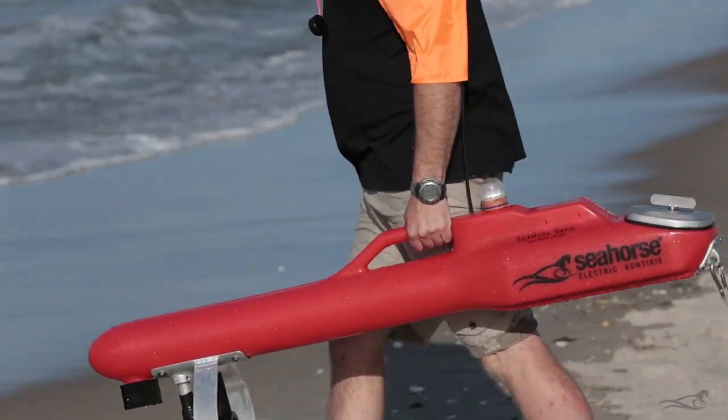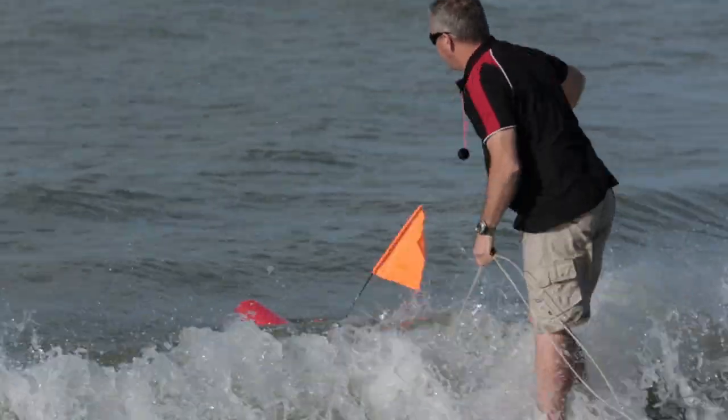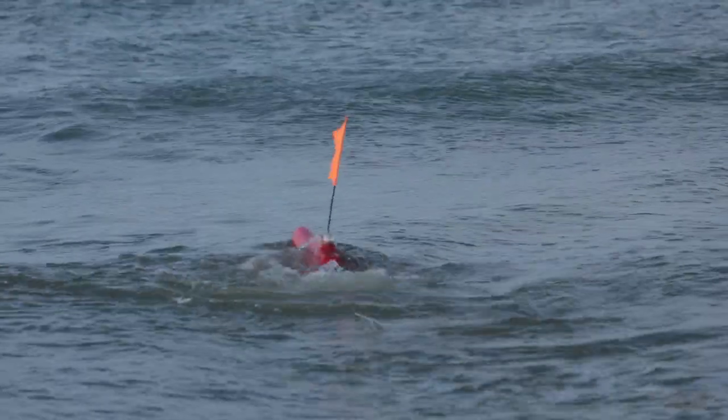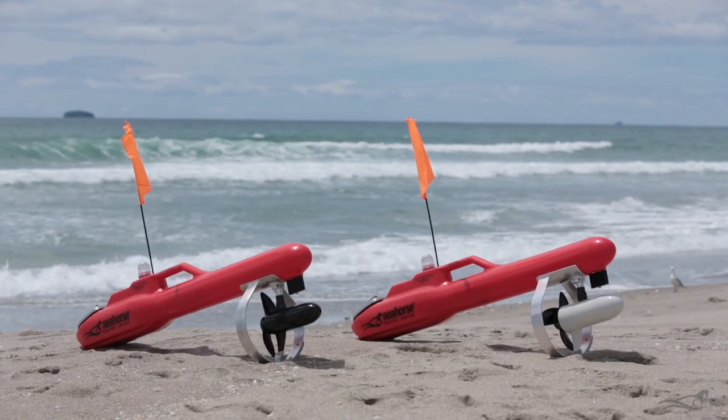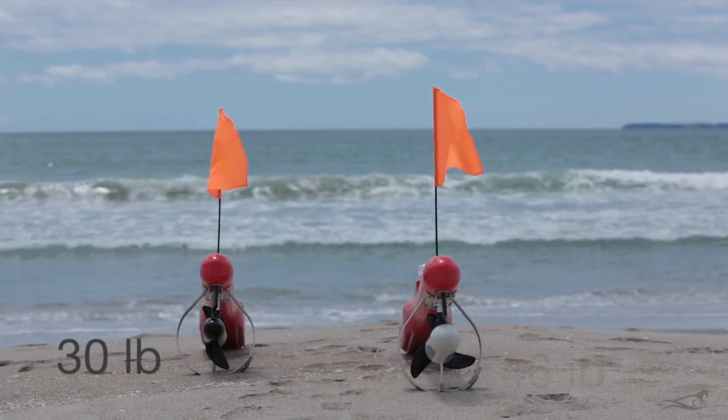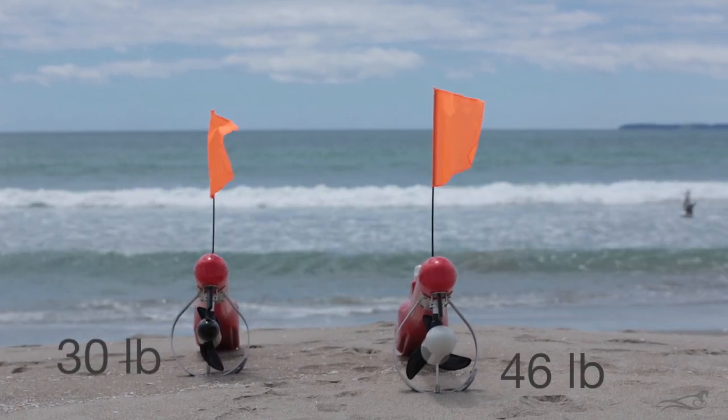The Standard Seahorse comes without the autopilot system and requires you to manually direct it on the correct course. The Standard Seahorse comes with a choice of two motor sizes, being either the original 30lb or the more powerful 46lb thrust motor.